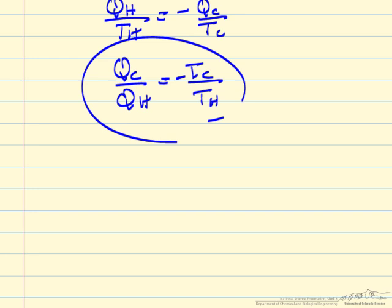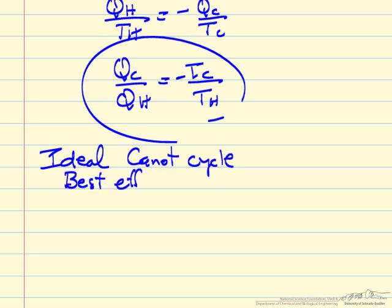So note that this is an ideal Carnot cycle. It doesn't mean we can actually run this in real life. It's an indication of what's the best. So this is the best efficiency between these two temperatures. We need a high temperature energy source. We need a low temperature to reject the heat. We're not going to do as well as this, but this gives us a benchmark on how well we can do.